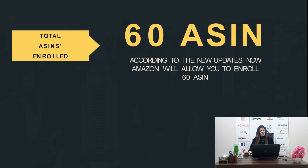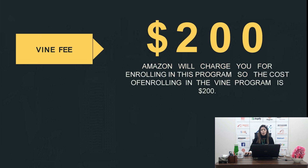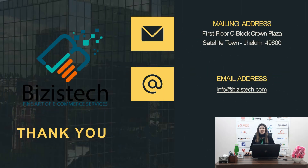Here is the new update for Amazon sellers. According to the new update, Amazon will now allow you to enroll 60 ASINs. This is a good update — you can enroll more ASINs and get more trusted reviews. But remember one important thing: Amazon will charge you for enrolling in this program. The cost of enrolling in the Vine program is $200. Thanks for watching — please like, share, and subscribe to our channel. Thank you so much, bye!